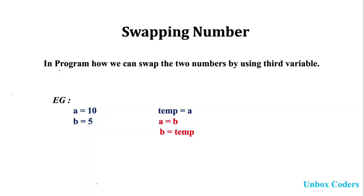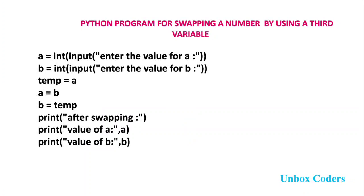So in the output, the a value becomes 5 and the b value becomes 10. This is the first way of the program. Now we will write the Python program for swapping a number using a third variable. In the Python file, we take the input using the input function with the variable name a. We use the int function to convert the string input to an integer value.